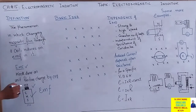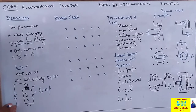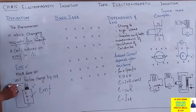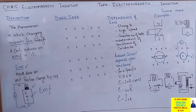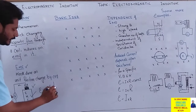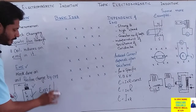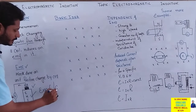اگر اس battery کو connect کر دیا جائے کسی بھی circuit میں تو charges کا flow possible ہو جائے گا — higher potential سے lower potential کی طرف۔ تو پھر ہم یہ بھی کہہ سکتے ہیں کہ EMF کے ساتھ ساتھ دوسری چیز exist کر رہی ہے: current۔